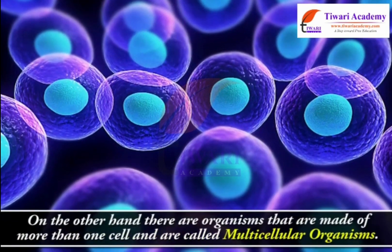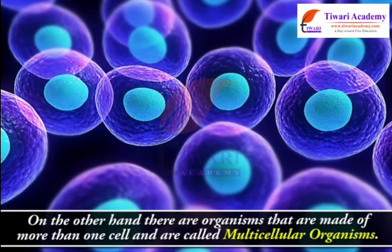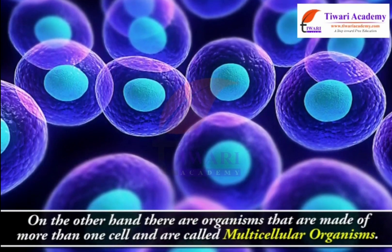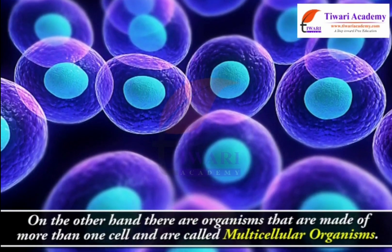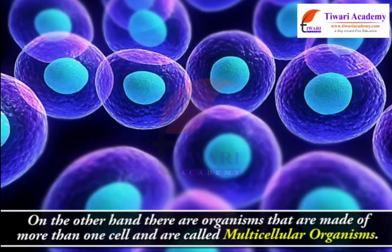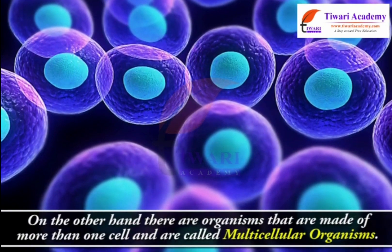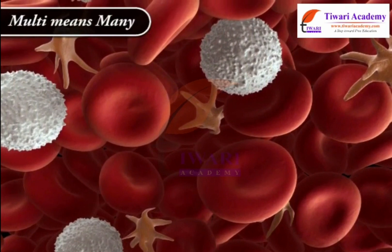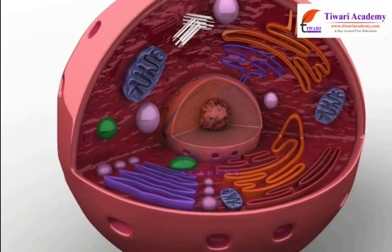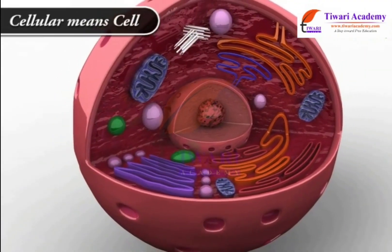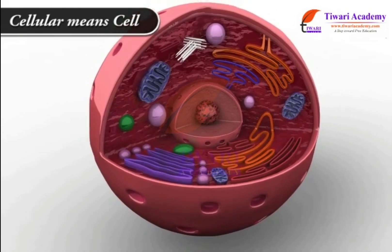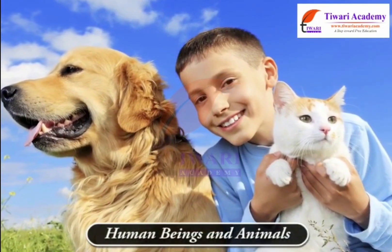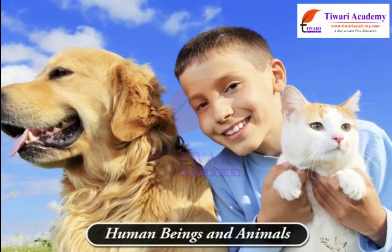On the other hand, there are organisms that are made of more than one cell and are called multicellular organisms. 'Multi' means many, and 'cellular' means cell. Examples of multicellular organisms are human beings and animals.